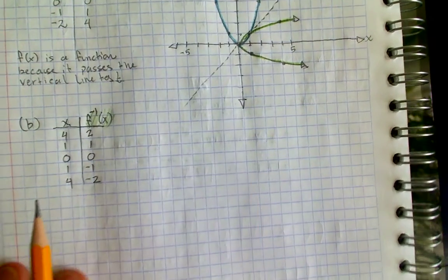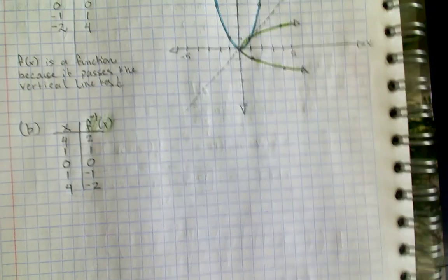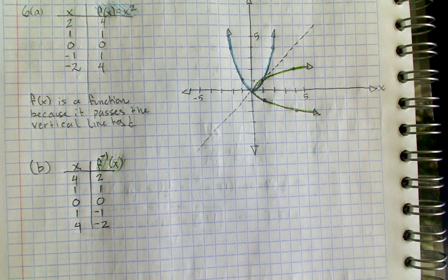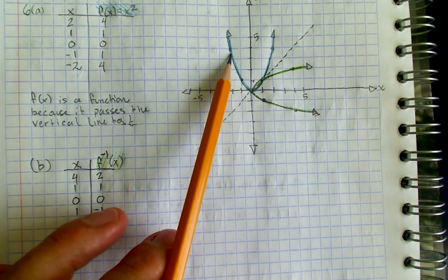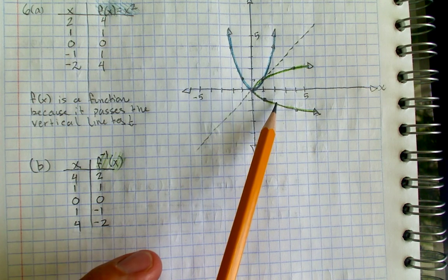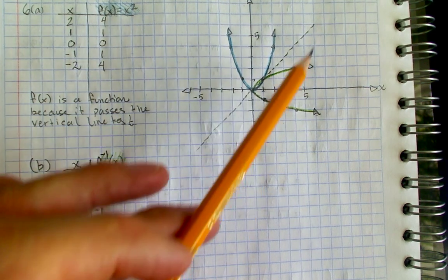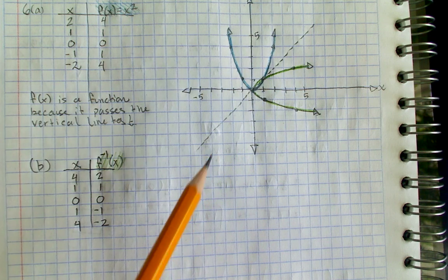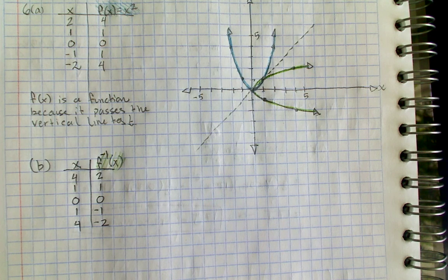So there's just a lot of great and interesting relationships here between the graph of f of x, the graph of the inverse of f of x, and this line y equals x.